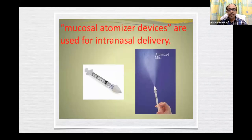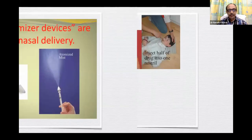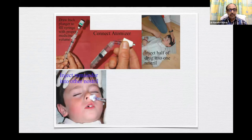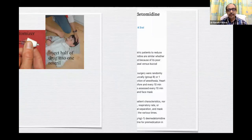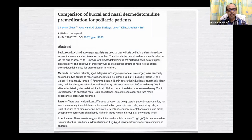The mucosal atomizer device can be used for intranasal delivery: draw back the plunger to fill the syringe with the proper medicine volume, attach the atomizer, inject half the drug into one nostril, and inject the remainder into the other nostril. A study comparing buccal and nasal dexmed as premedication for pediatric patients concluded that intranasal dexmed 1 microgram per kg is more effective than buccal administration.